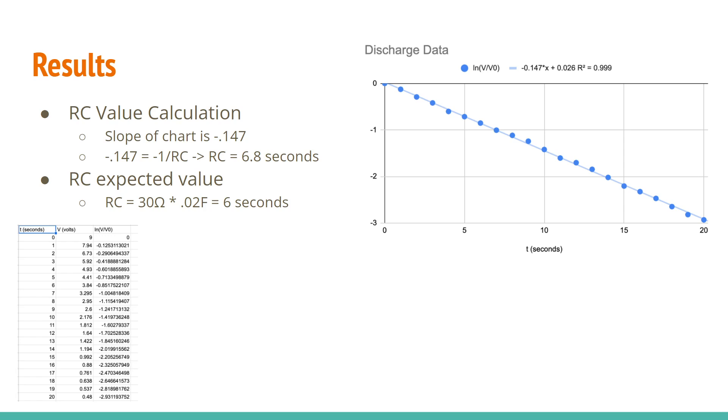So the results from that lab, I recorded all of my values from 0 to 20, the volts. And then I just used an Excel function to get the natural log of the voltage divided by V0, which was 9. And then I plotted the data, since the natural log would create a linear fit. And I took the trend line, which was just negative 0.147. That's the slope.